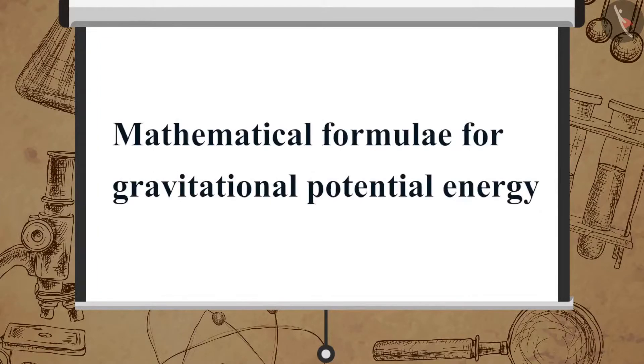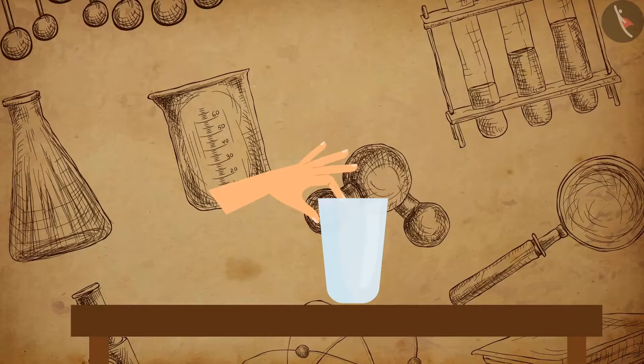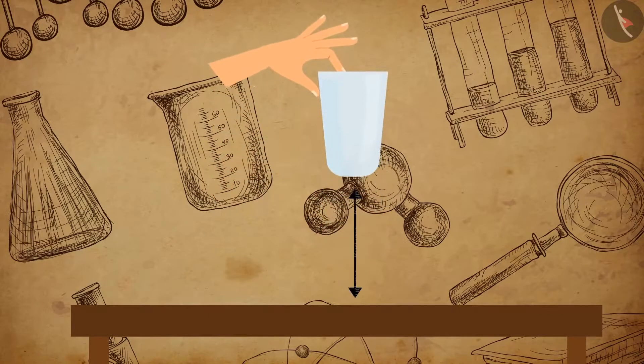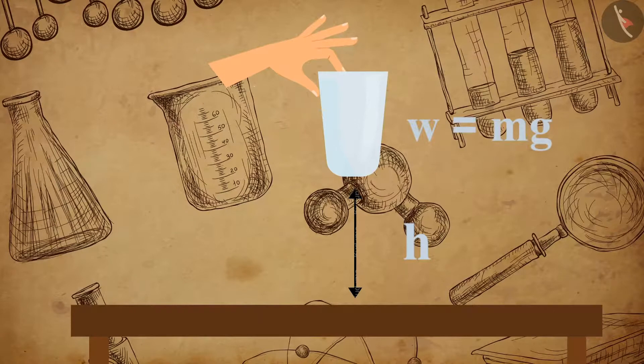Now, let us derive the mathematical formulae for gravitational potential energy. Suppose an object with mass M is raised from the ground through a certain height, H. The force required to raise the object is equal to the weight of the object, that is, Mg.